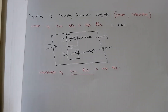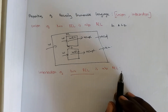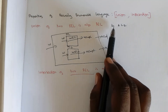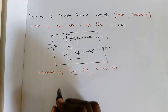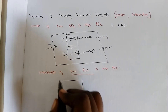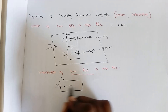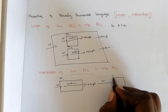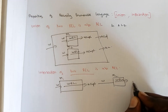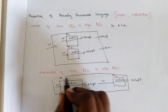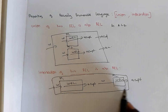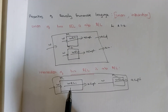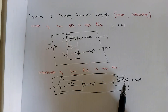The next property is that the intersection of two recursively enumerable languages is also recursively enumerable. For intersection, when we consider languages L1 and L2, only inputs common to both — that is, belonging to both L1 and L2 — are taken. We construct Turing machine M1 for L1; if the input is accepted by M1, we send the same input to M2. If the input is also accepted by M2, we accept it. So for union, acceptance by either M1 or M2 suffices, but for intersection, the input must be accepted by both M1 and M2.